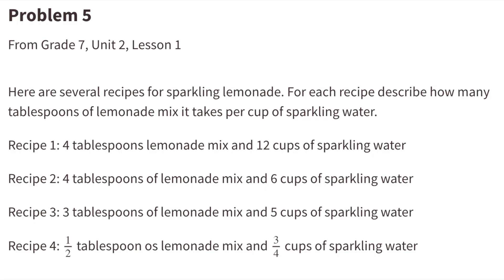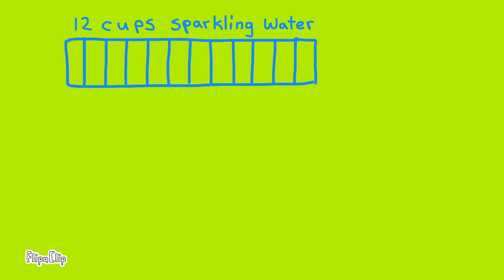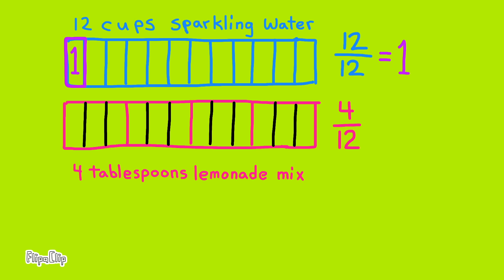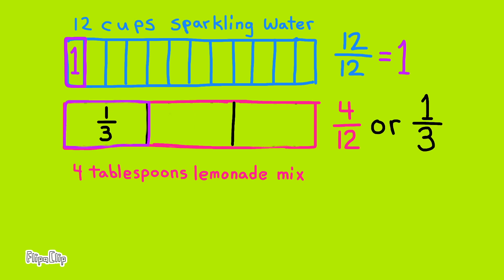Number five: Here are several recipes for sparkling lemonade. For each recipe, describe how many tablespoons of lemonade mix it takes per cup of sparkling water. We divide both quantities to get one cup of sparkling water and adjust the lemonade mix accordingly. This diagram shows 12 cups of sparkling water and 4 tablespoons of lemonade mix. 12 divided by 12 equals 1 cup, and 4 divided by 12 equals 4/12, which is 1/3. The ratio is 1/3 tablespoon of lemonade mix to 1 cup of sparkling water.